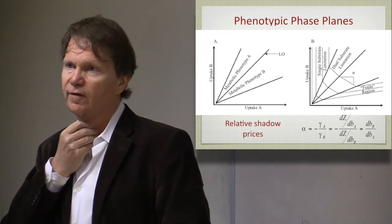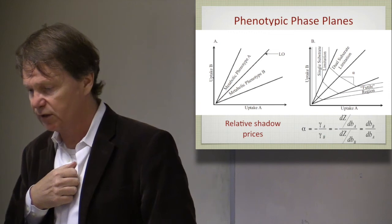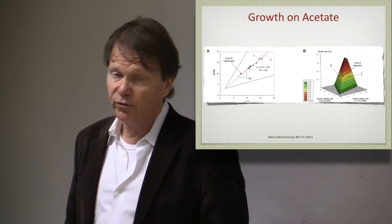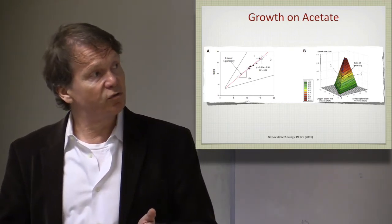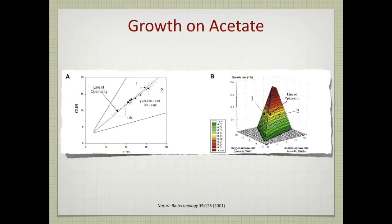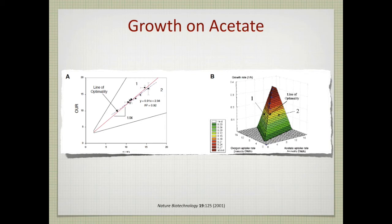The phenotypic phase plane for acetate shows growth of the MG1655 strain on acetate. Acetate uptake rate is on the x-axis and oxygen uptake rate is on the y-axis. The model predicts cells should be on the line of optimality shown in red, and the experimental data points tend to fall on that line, showing that this E. coli strain grows optimally on acetate. The three-dimensional rendering shows the growth rate plotted above the plane, and the three data points—acetate uptake, oxygen uptake, and growth rate—tend to fall exactly on the edge of the polytope where the optimal solutions are.